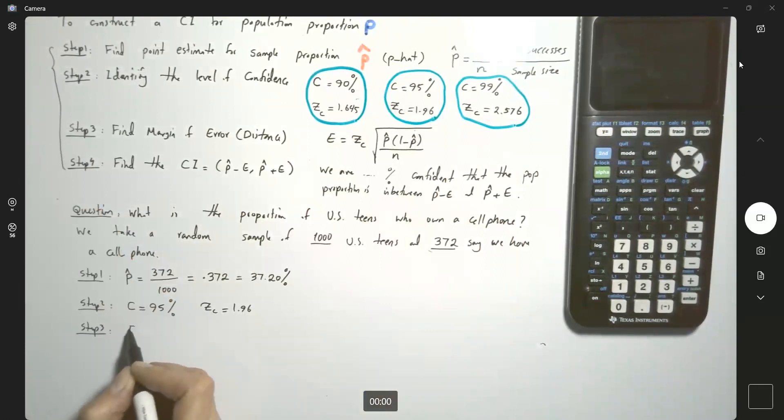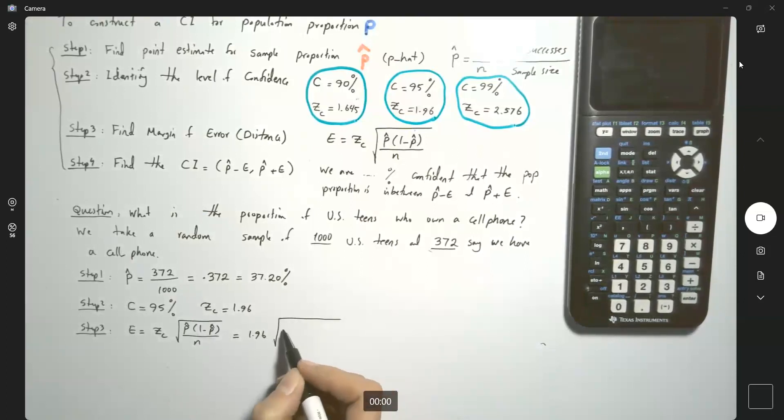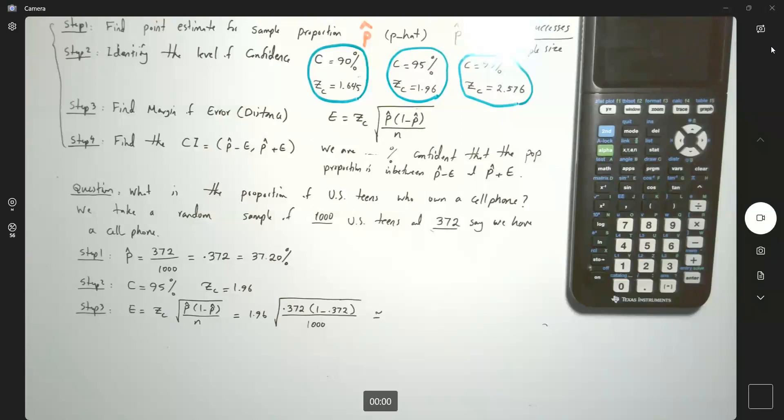In step three, we can easily build the margin of error, which is Zc times square root of P hat times 1 minus P hat divided by n, or 1.96 times square root of 0.372 times open parentheses 1 minus 0.372 close parentheses divided by n, n is equal to a thousand. It approximately is 0.03 or about 3%.